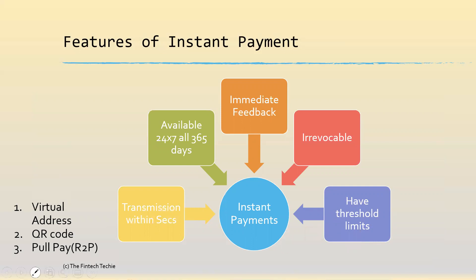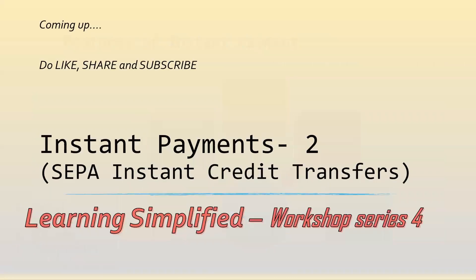There are also value-added features: you need not give account numbers — you can use a virtual address, like how India uses a Virtual Payment Address for UPI payments. Payments can be initiated through a QR code. Some networks also facilitate a Request to Pay, which is a pull-payment or direct debit — you pull funds from the payer. These are additional features which may or may not be present in different instant payment networks.